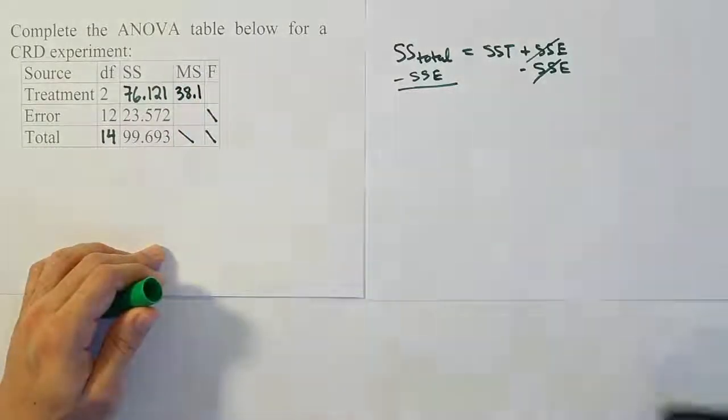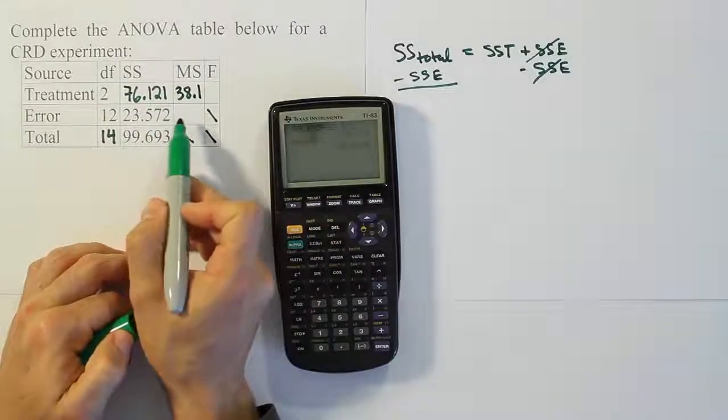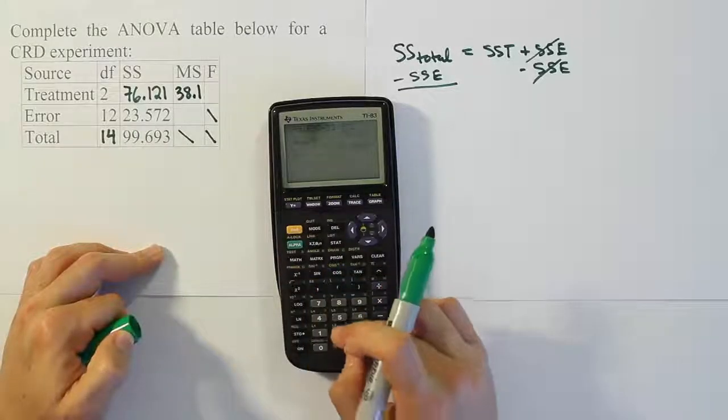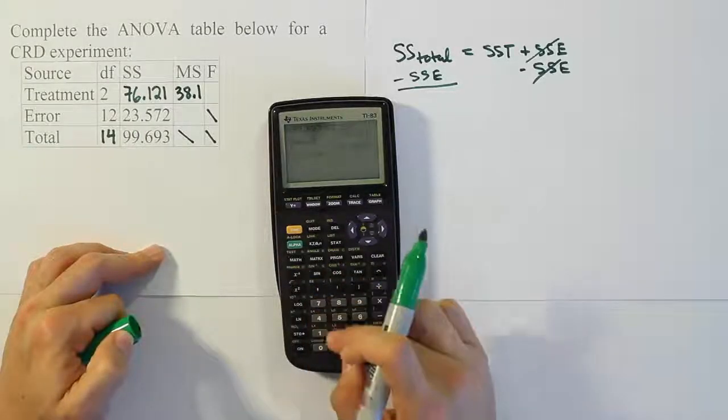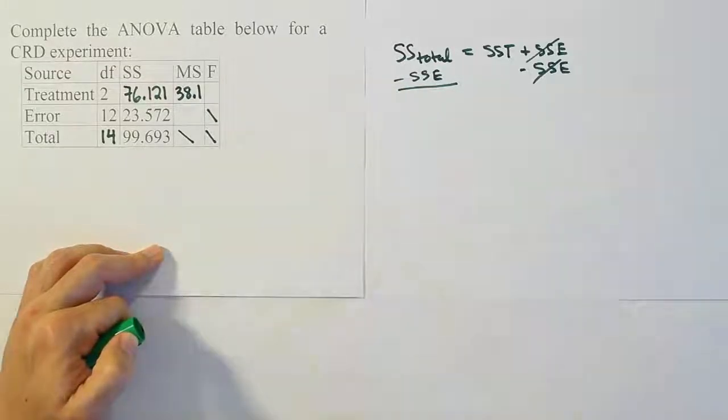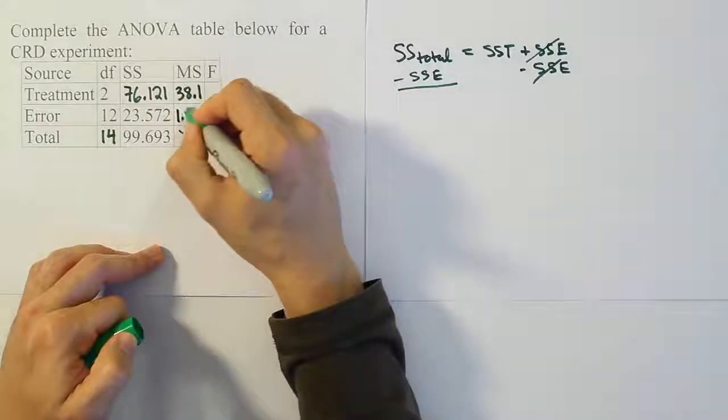And then from there, we're going to do the same for the error to get its MSE value. It's 23.572 divided by 12. So, 23.572 divided by 12, and when you're done with that, you get 1.964.